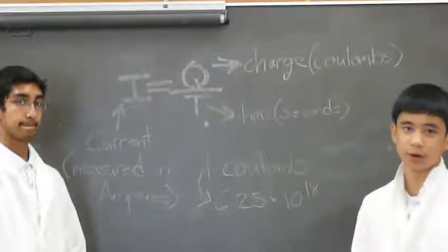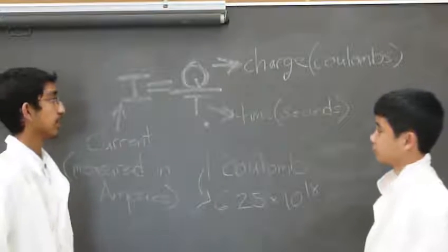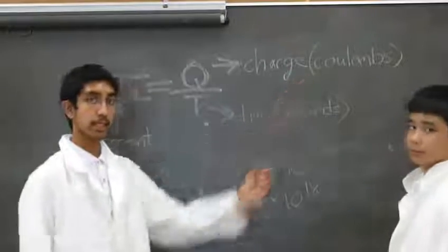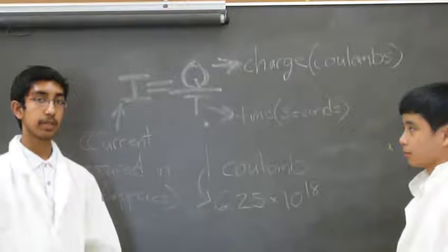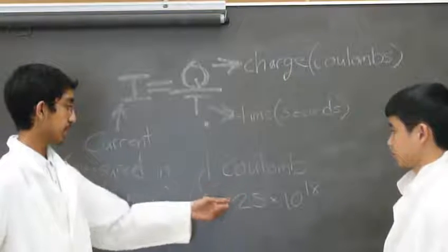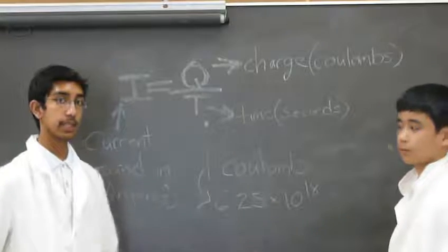As we said before, electric current is the movement of charge. Charge is represented by the variable q. Charge is also measured in coulombs. Charge is not measured in electrons because electrons are too small to be measured. One coulomb is equal to 6.25 times 10 to the power of 18 electrons.